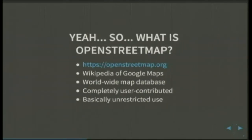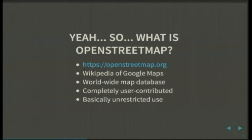So what is it? It's hosted at OpenStreetMap.org. You could consider it the Wikipedia of Google Maps in that it's a lot more open. It's user-contributed and it's not hosted by a big corporation. It's got a worldwide map database and it's mostly unrestricted use. It used to be Creative Commons licensed, now they have their own open mapping license created specifically for this purpose, which lets you do pretty much what you like.